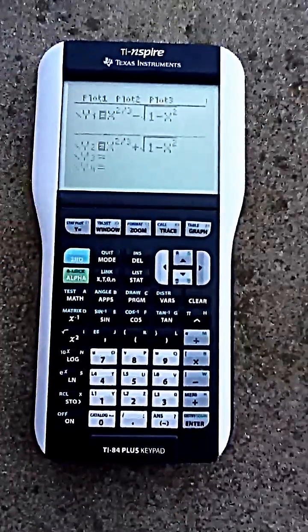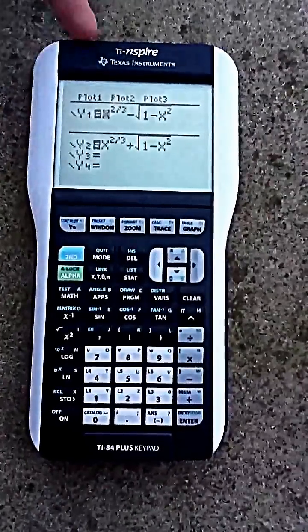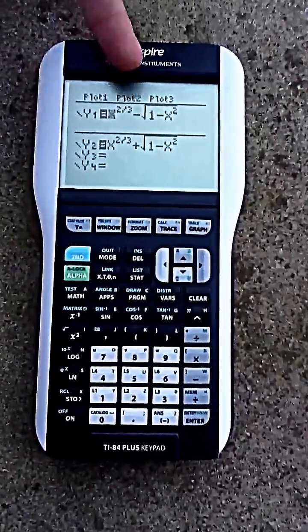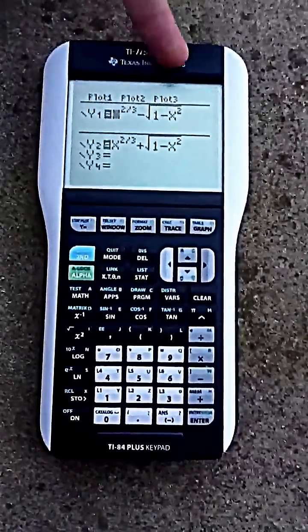Then you're going to go to Y equals, and you're going to type in the following equations: x to the two-thirds minus the square root of 1 minus 2x squared.